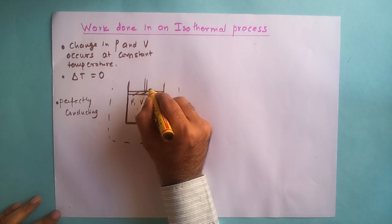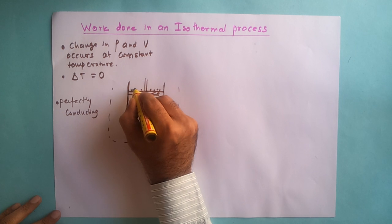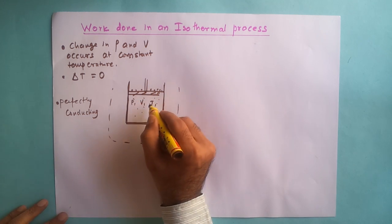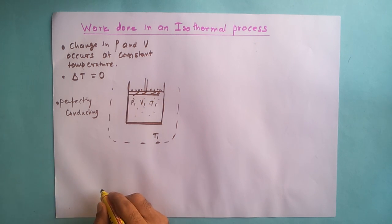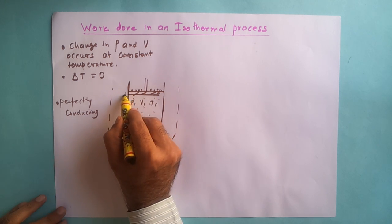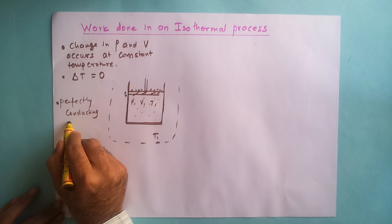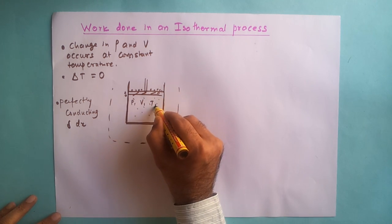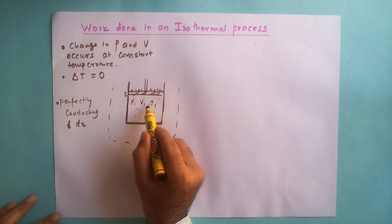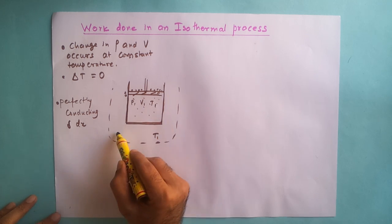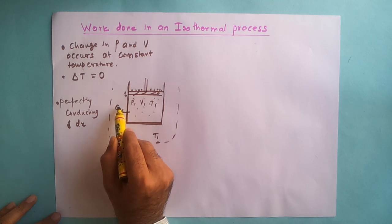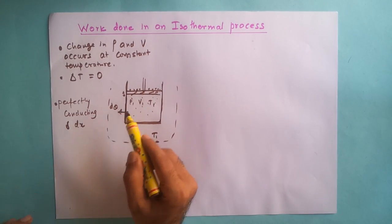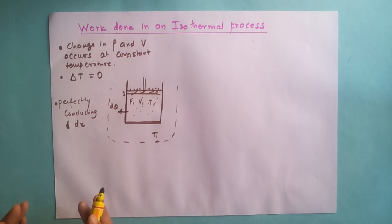The pressure and volume are maintained by very small weights placed on the piston. If I want to compress the gas, I add one more extremely small weight. The piston moves down by an extremely small distance dx. The gas gets compressed and the temperature rises momentarily. Since the walls are perfectly conducting, a small amount of heat DQ immediately transfers to the surroundings at temperature T1, keeping the temperature constant.